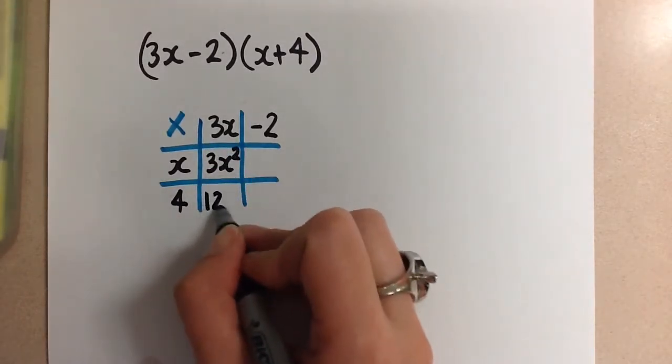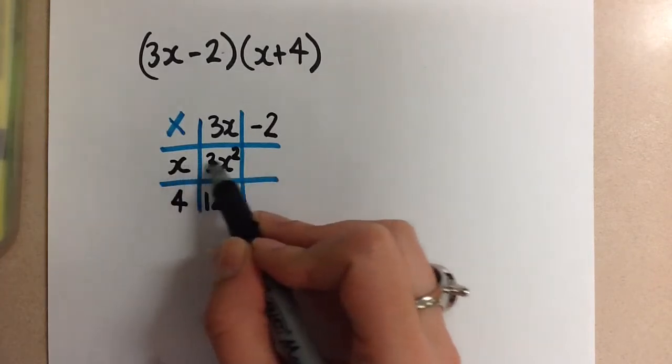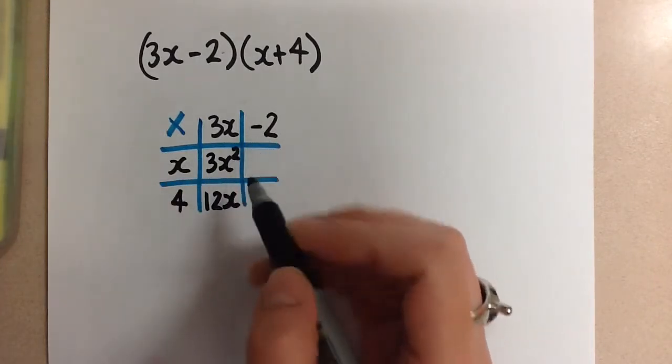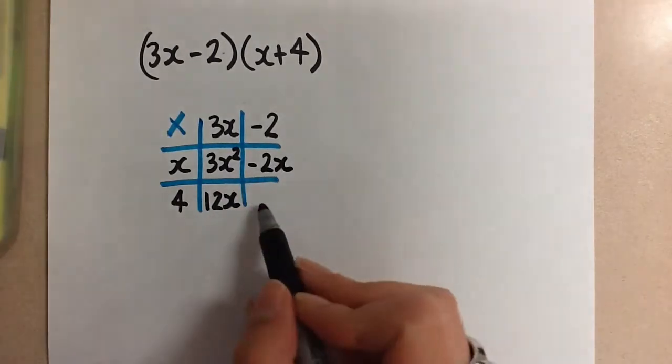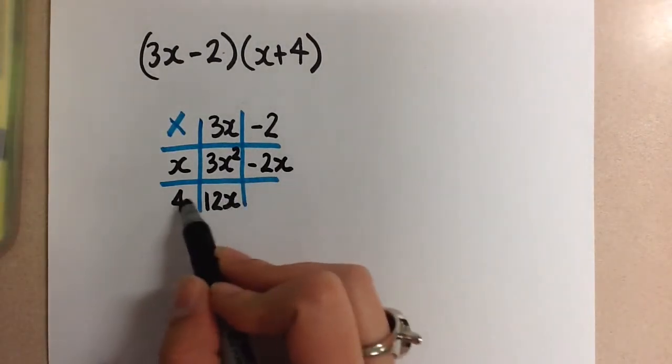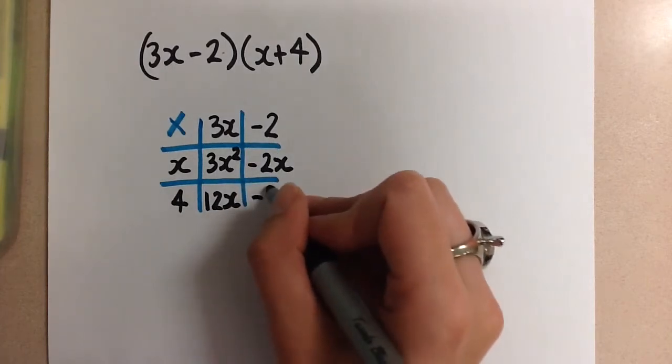In this box, we're going to multiply x with negative 2, and we get negative 2x. And in this box, we multiply 4 with negative 2, and we get negative 8.